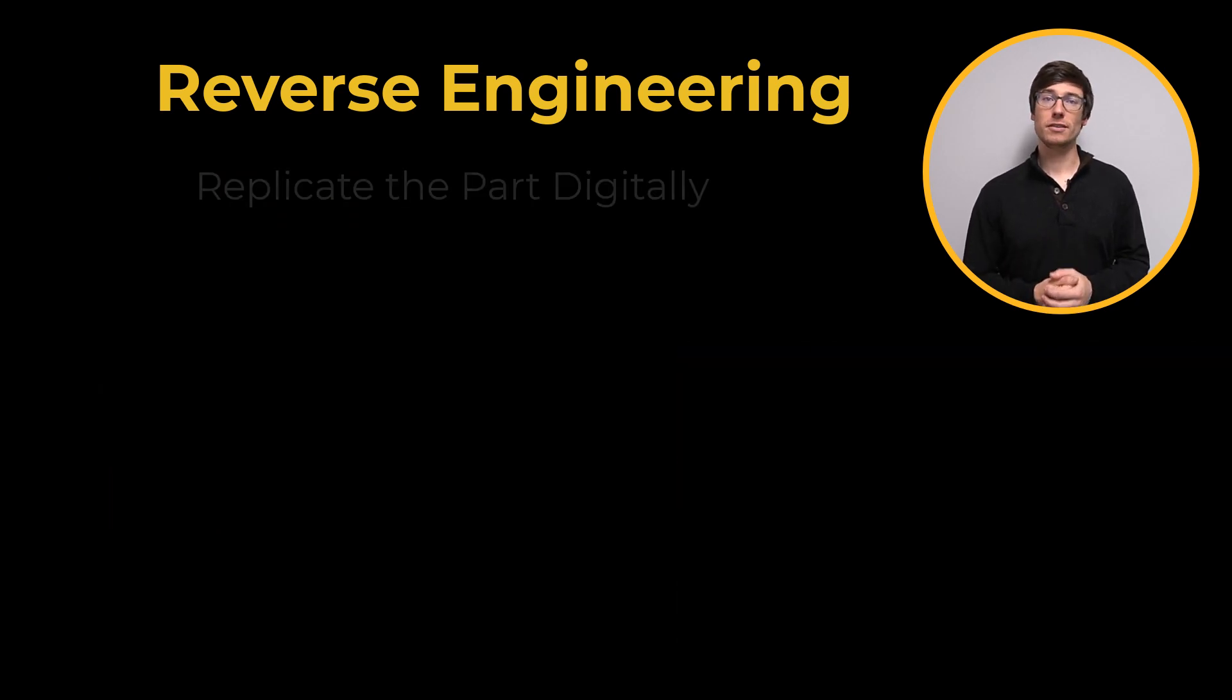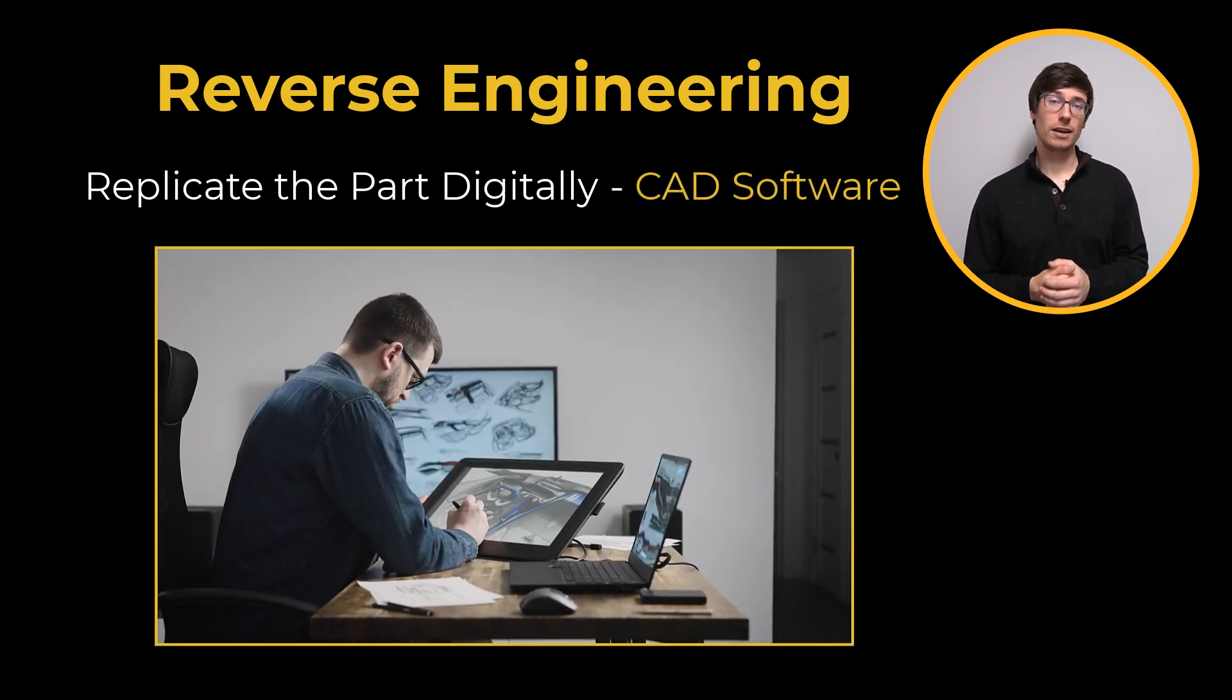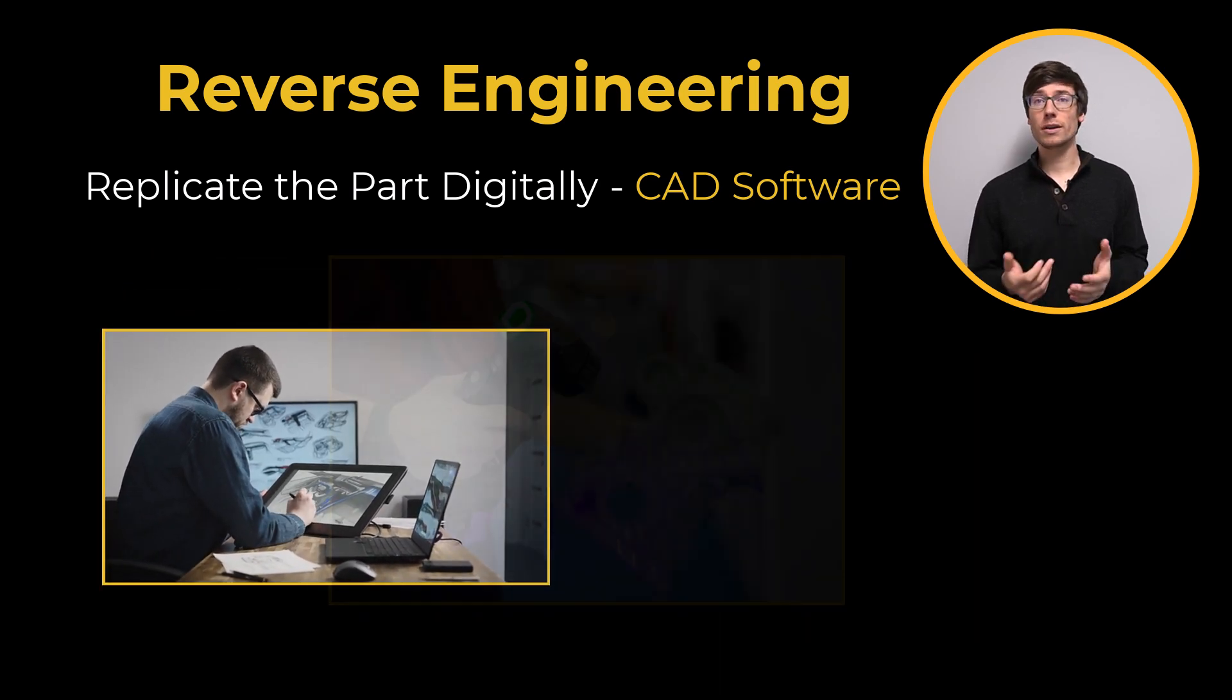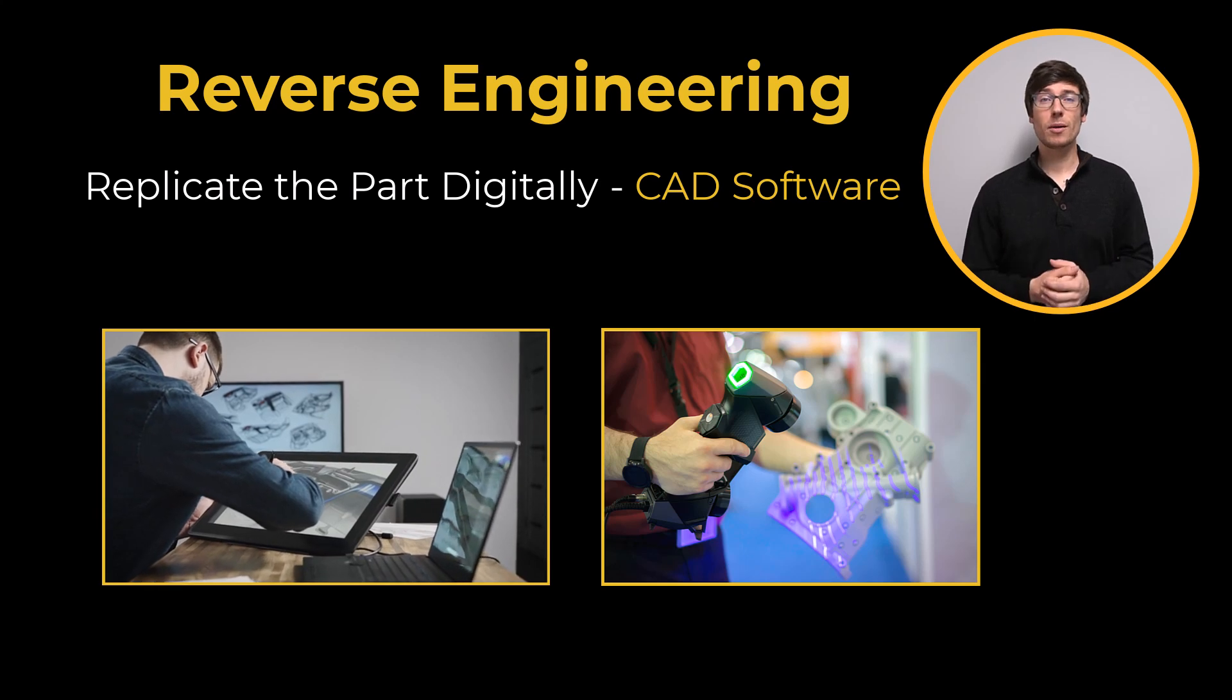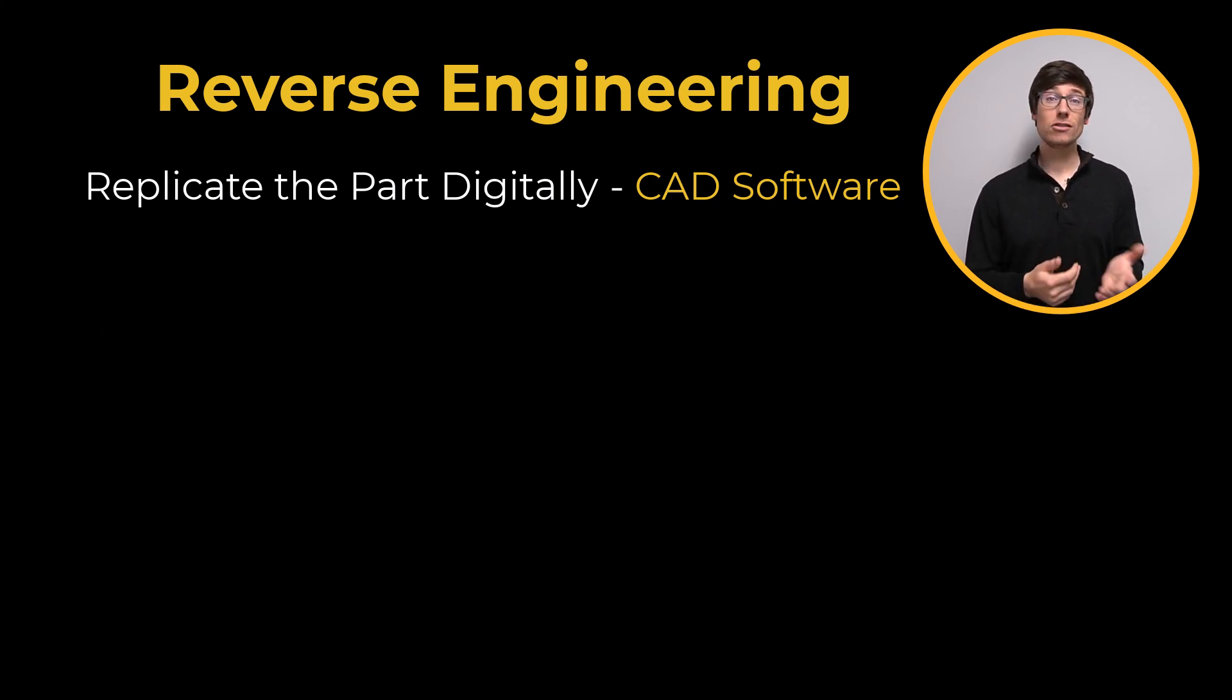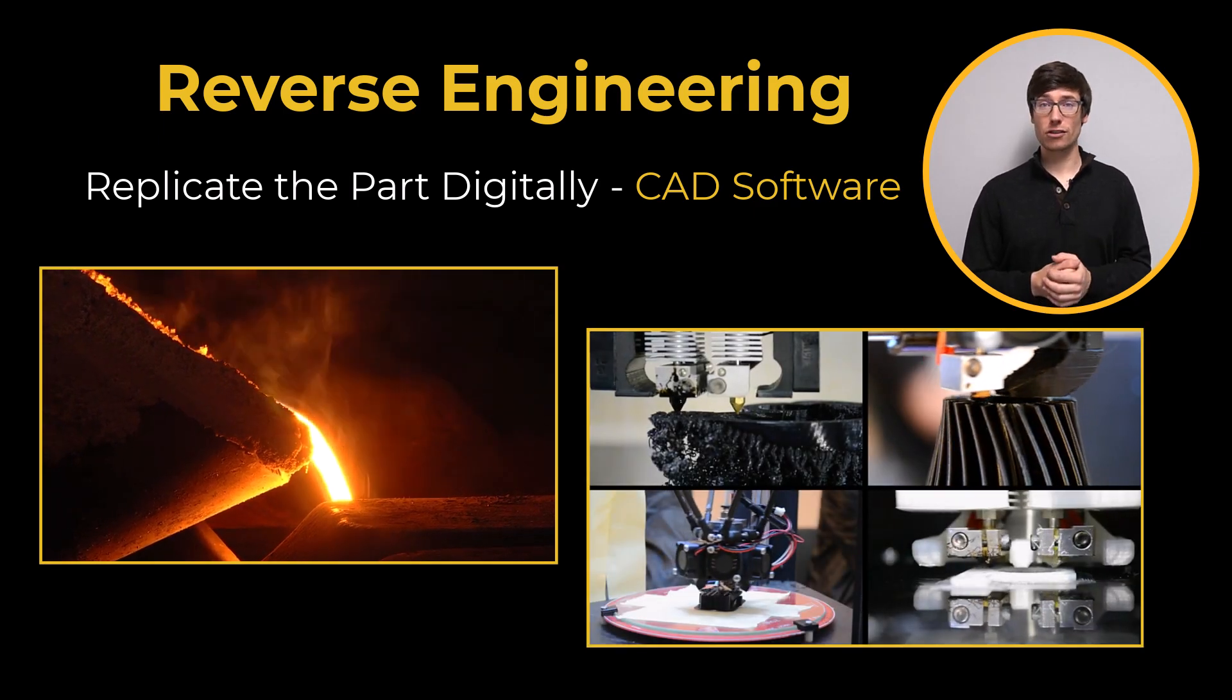The basic process is to replicate the part digitally, typically in a computer-aided design software. The digital geometry is created by hand or using scan-to-CAD technology. Once the geometry is recreated, the engineer can build the part using traditional or additive manufacturing methods.